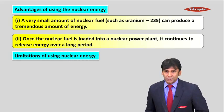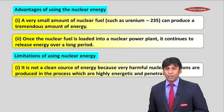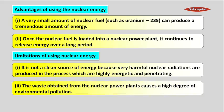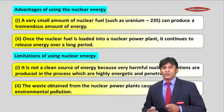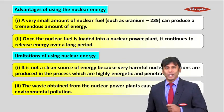Now let us see what are the limitations. Why don't we use this on a very large scale? The first limitation, it is not a clean source of energy. Because very harmful nuclear radiations are produced in the process, which are highly energetic and penetrating. Now the second limitation is, the waste obtained from the nuclear power plant causes a high degree of environmental pollution. So this was the advantages and limitations of using nuclear energy.